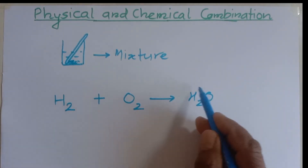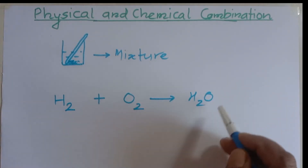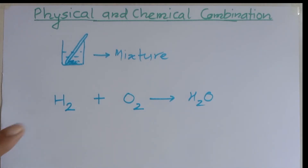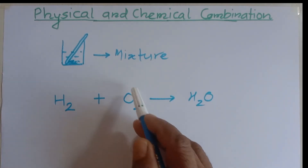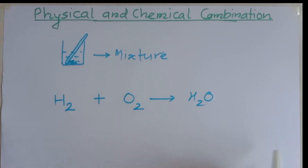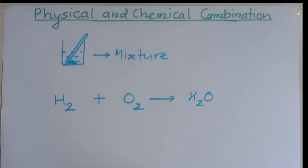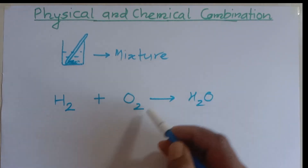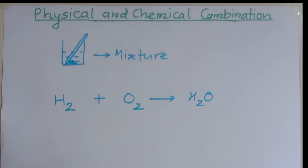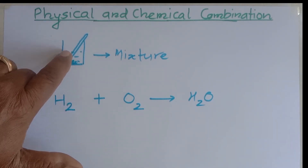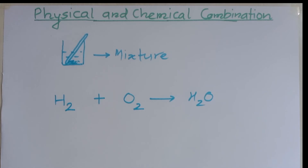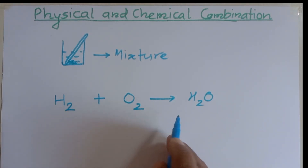Now water doesn't contain the property of hydrogen — hydrogen burns by itself, but water doesn't burn. Oxygen helps in burning, but water doesn't help in burning; instead, it can be used to extinguish fire. So water doesn't contain the property of hydrogen or oxygen. This combination is completely different from physical combination and is called chemical combination.